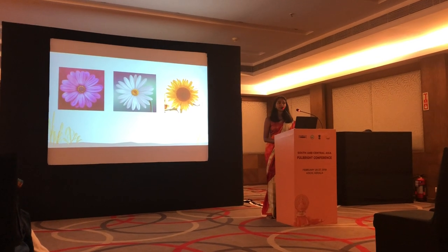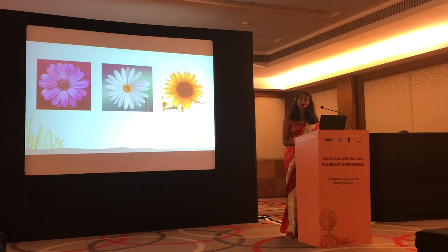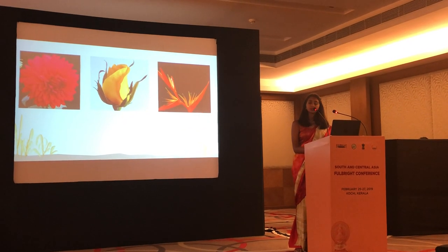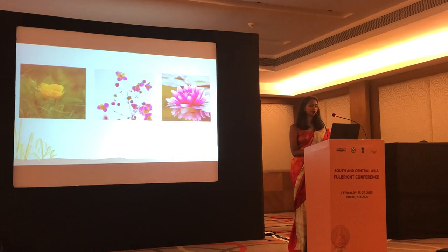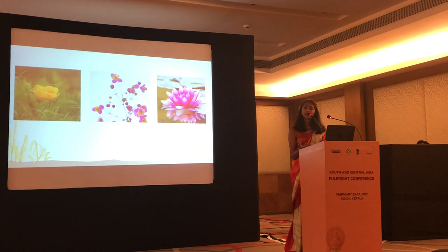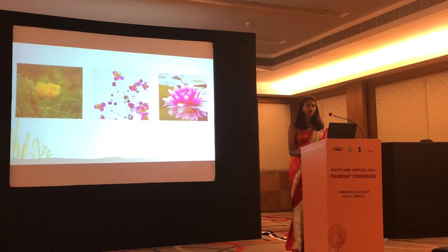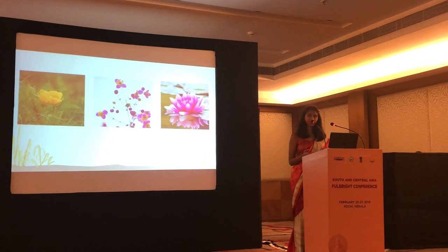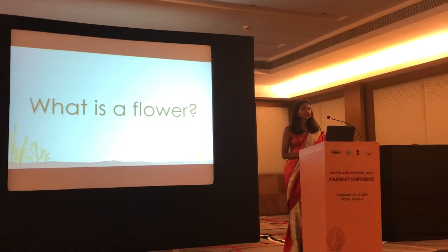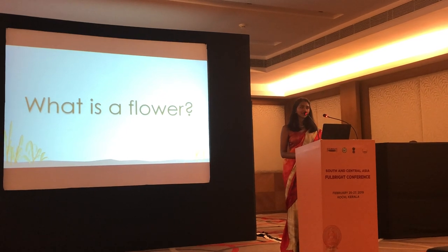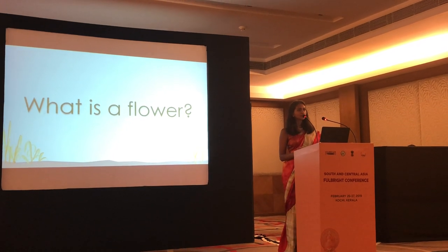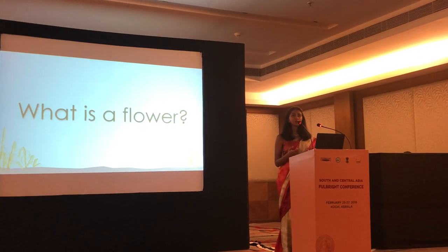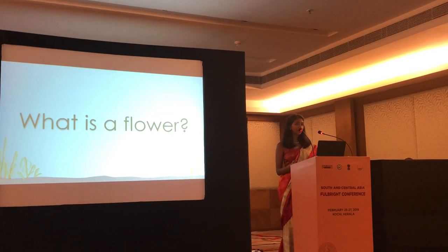Maybe you'll talk about the colors, but flowers have all different kinds of colors. Maybe you would try to define a flower by shape, but look at this diversity of shapes. And maybe you might try size, but we have big flowers and small flowers. You might even try odor, but there's such diversity in the odors of flowers because they all have different chemicals. So we're back to the conundrum — what exactly is a flower?